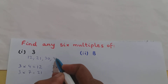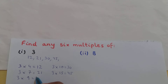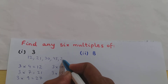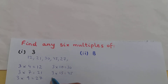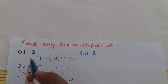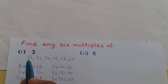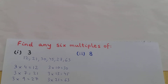3 into 15 is 45, so 45 is a multiple of 3. 3 into 9 is 27, so 27 is a multiple of 3. 3 into 21 is 63, so 63 is a multiple of 3. So these are any six multiples of 3.